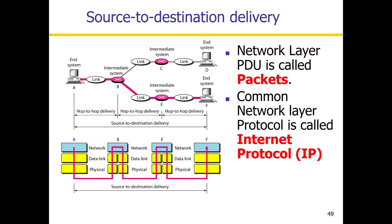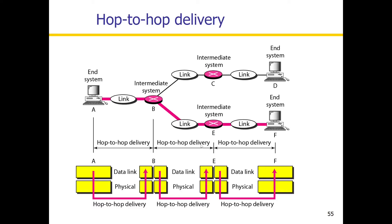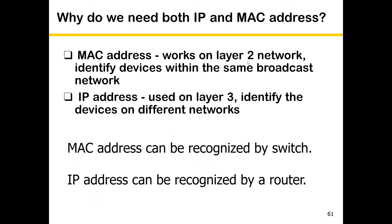The MAC address is basically assigned at the data link layer — layer 2. We can see that the MAC address is hop-to-hop delivery, unlike the IP address which is source to destination. So we can change the IP address, but the MAC address is completely changed because we are working on hop-to-hop. MAC address is working on layer 2, so MAC address is working on the same network. The IP address is layer 3, which is the network layer.